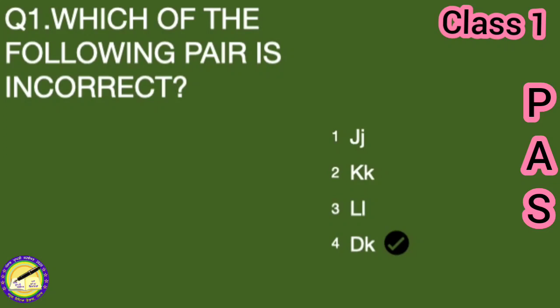Third is capital L, small l. Fourth is capital D, small k. So the last pair is incorrect because both the alphabets are different. So we will put a tick on the last option, D, K.